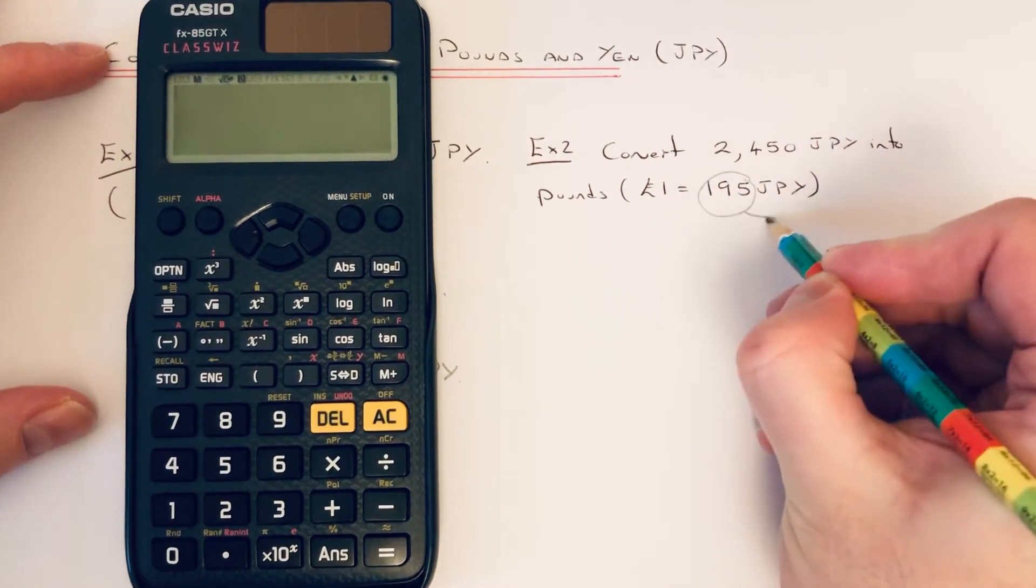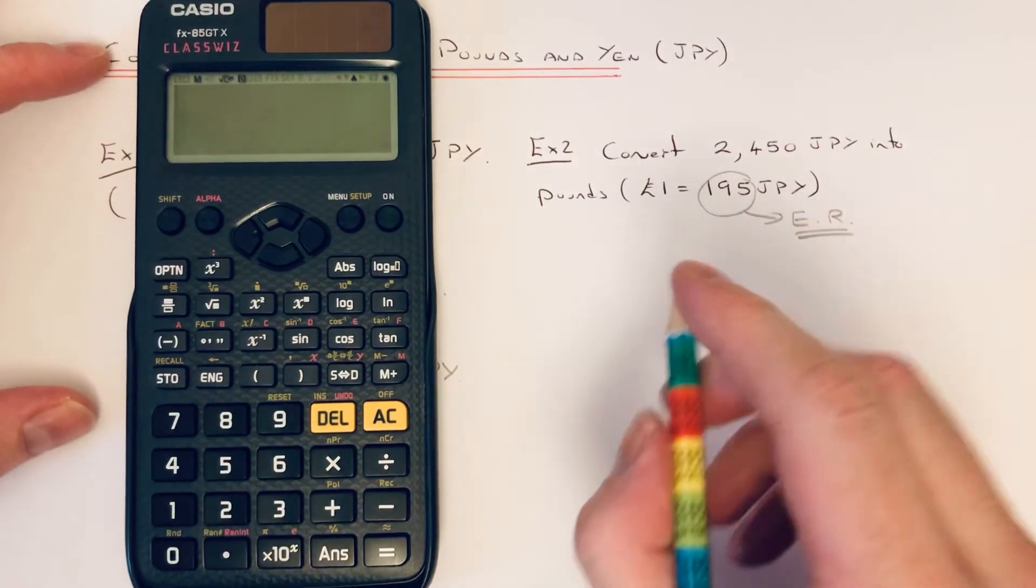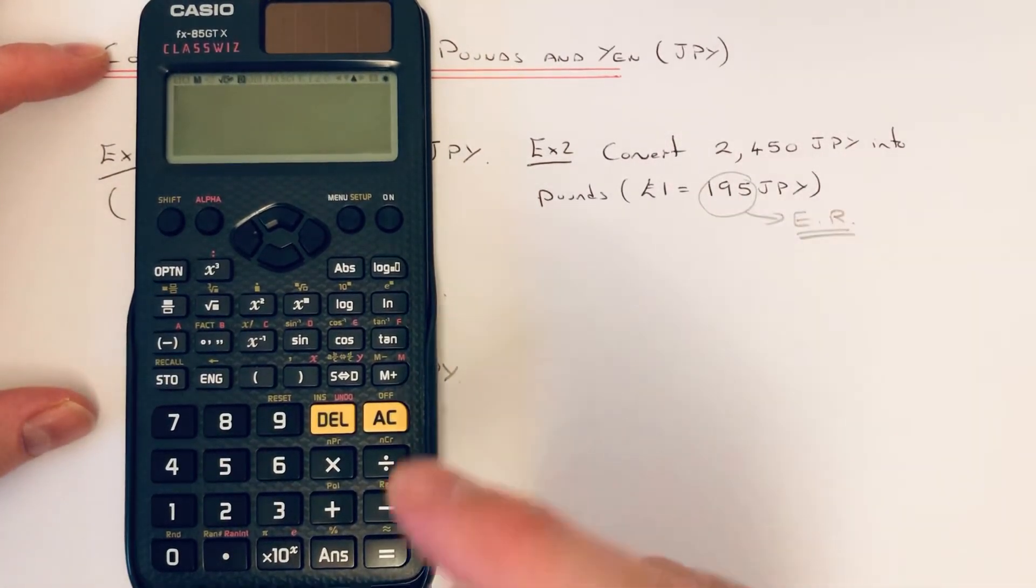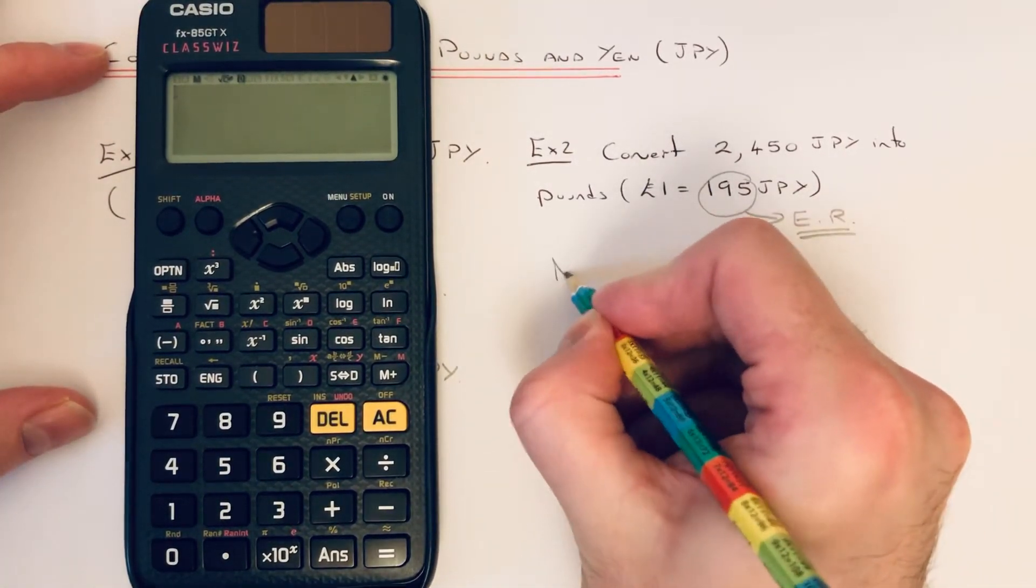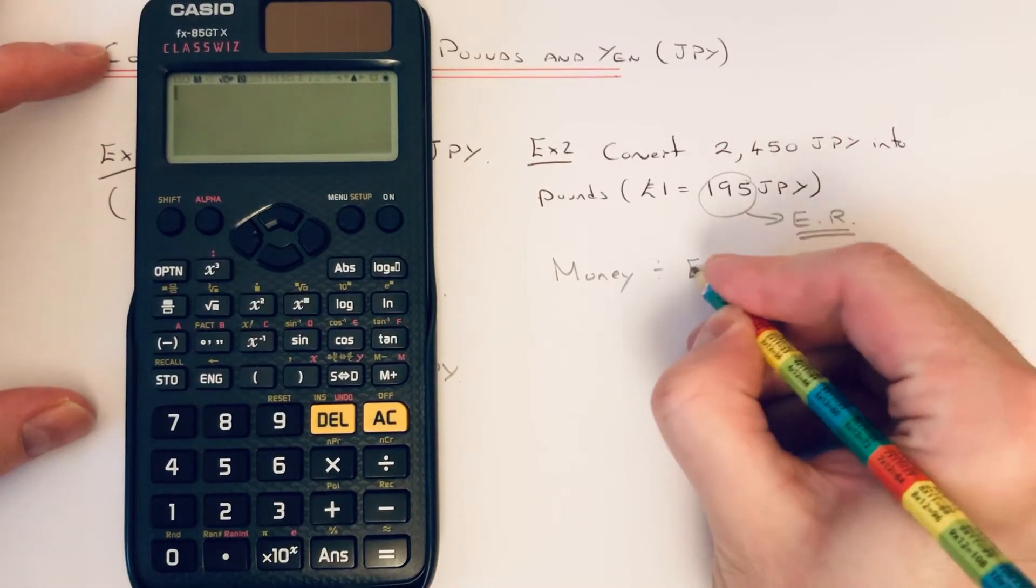This time we're converting it back into pounds. So what you do, you get your money and you divide it by the exchange rate. This is because the answer is smaller when it's in pounds.